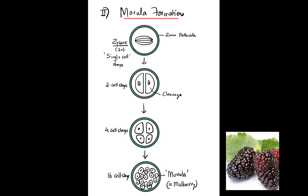The zygote undergoes cleavage: two cells form, then four, then sixteen — eventually forming the morula. Morula means mulberry; it looks like a cluster of mulberry fruits. So from the zygote we have the formation of the morula.